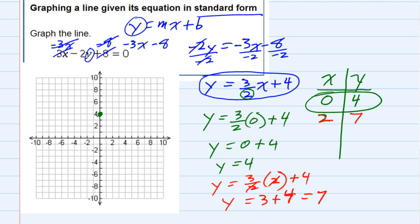And then graphing the second point, 2, 7: I go over to an x value of 2 and then up to a y value of 7.